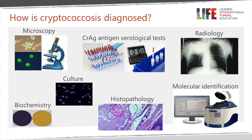Cryptococcal meningitis is diagnosed using multiple different methods, and today we focus on the antigen method because it is the most sensitive and easiest means of establishing the diagnosis. In some lesions, particularly skin or bone biopsies, you can directly see cryptococcal yeast cells, especially in spinal fluid using an India ink stain where yeast cells are quite easily visible, and you may occasionally see daughter cells attached to the larger mother cell.